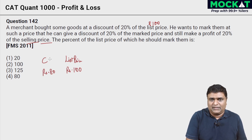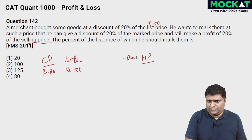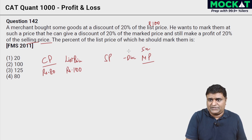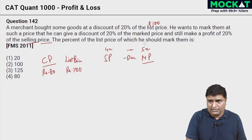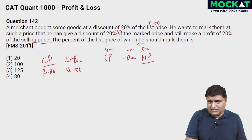He bought goods at a discount of 20 percent, so purchase price is rupees 80 — that's the actual cost price. He wants a mark price from which he gives a discount of 20 percent, i.e., one fifth of the mark price. If mark price is 5x, subtract x discount, giving selling price 4x. So: 5x minus x equals 4x — discount is 20 percent of mark price, which is one fifth, so discount is x and selling price is 4x.